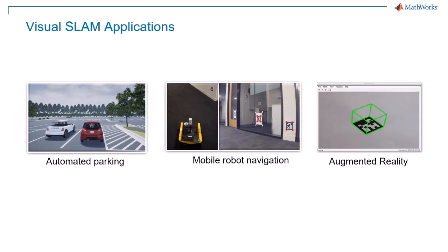Visual SLAM is valuable for localization when other means, like GPS, are unreliable or unavailable.